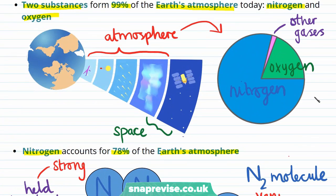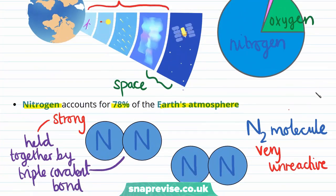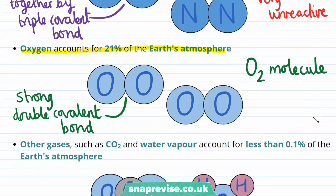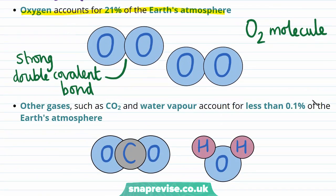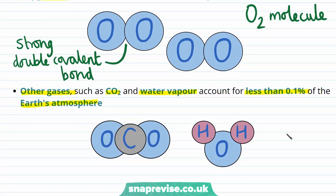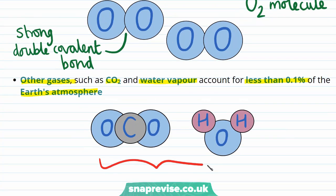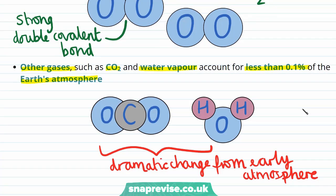As we saw in our pie chart, there are some other gases in the atmosphere; however, these account for less than 1% in total. Individually, other gases such as carbon dioxide CO2 or water vapour account for less than 0.1% of the Earth's atmosphere. This is a dramatic change from the early atmosphere where these gases were dominant — now they're less than 0.1% each.